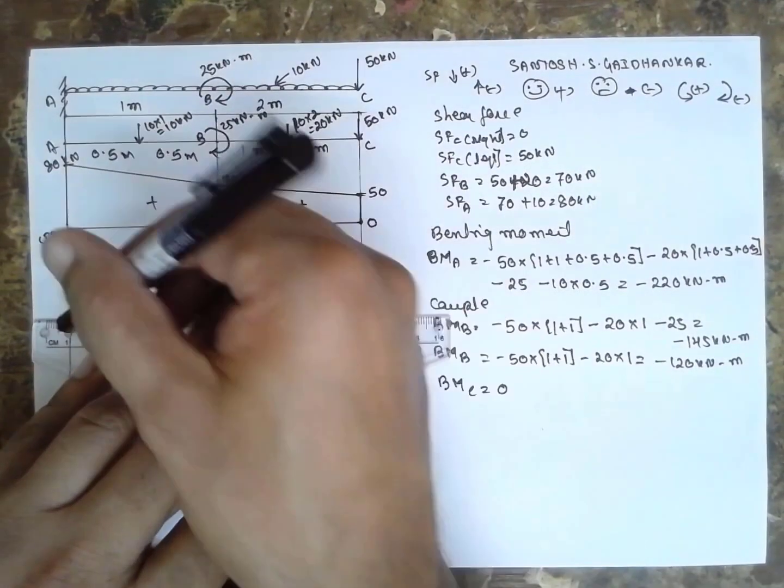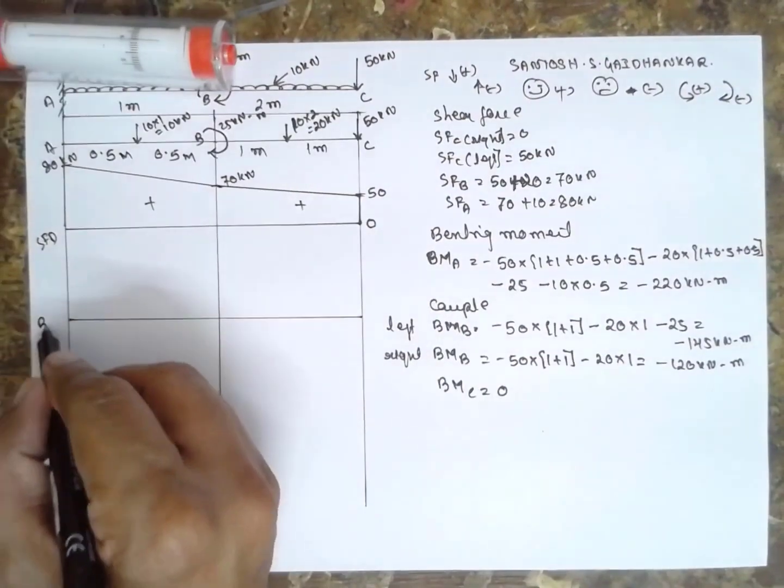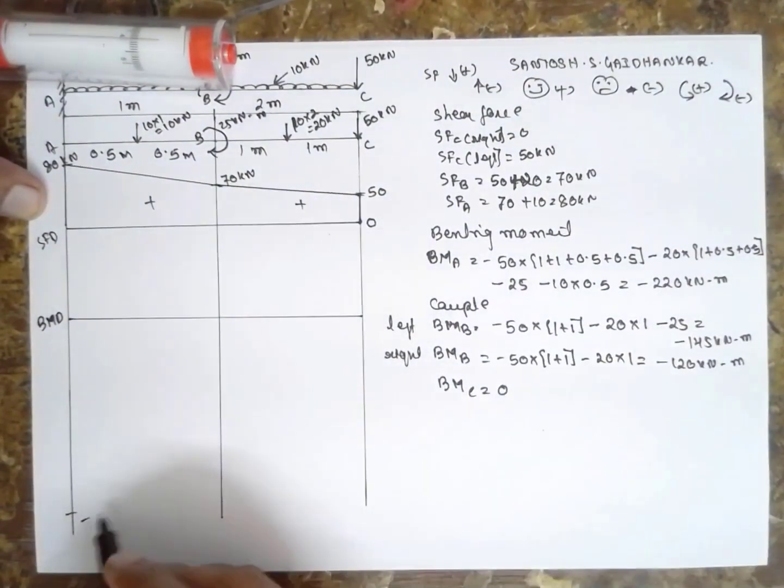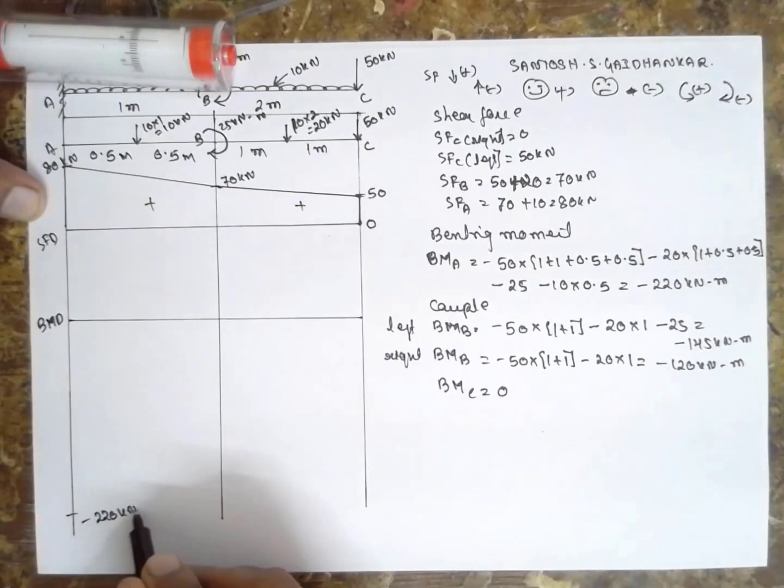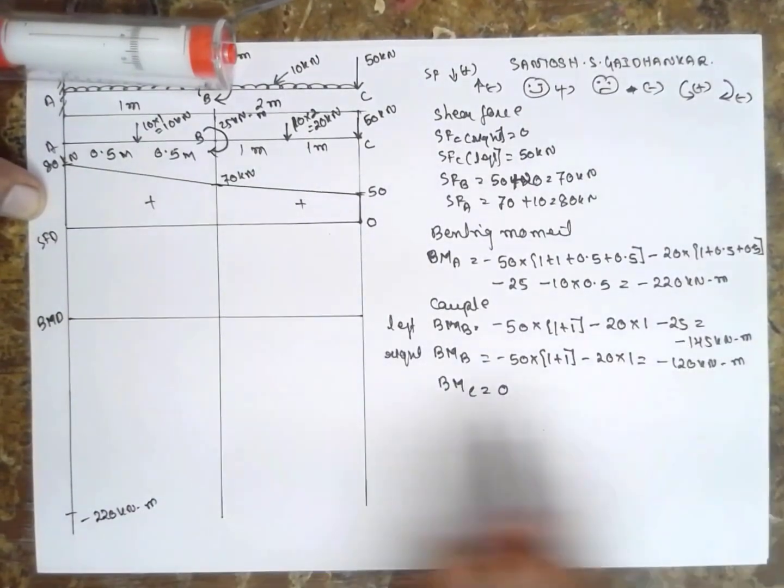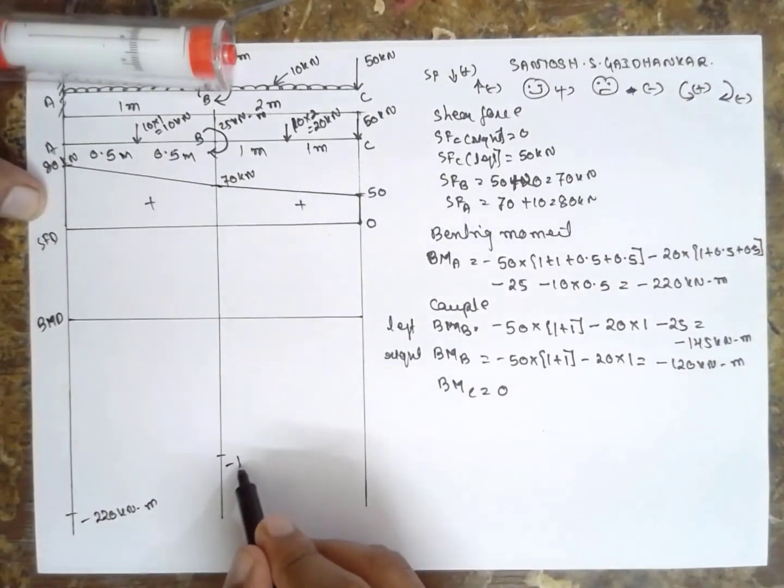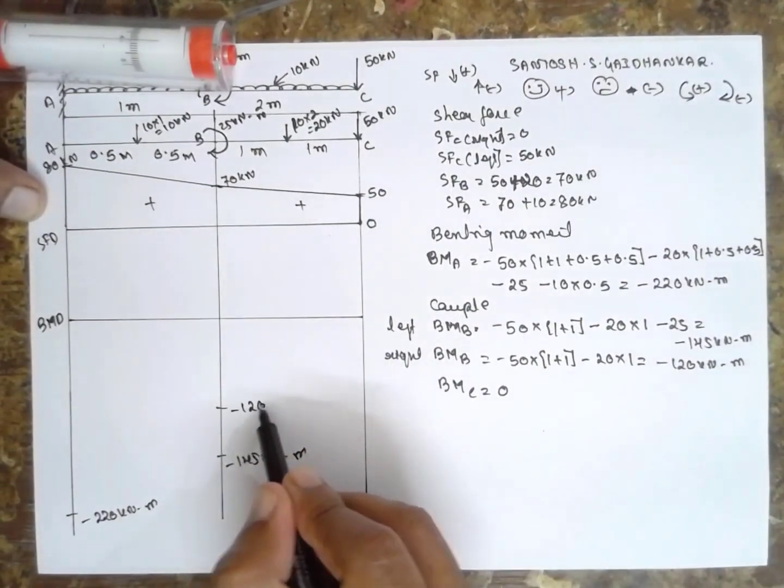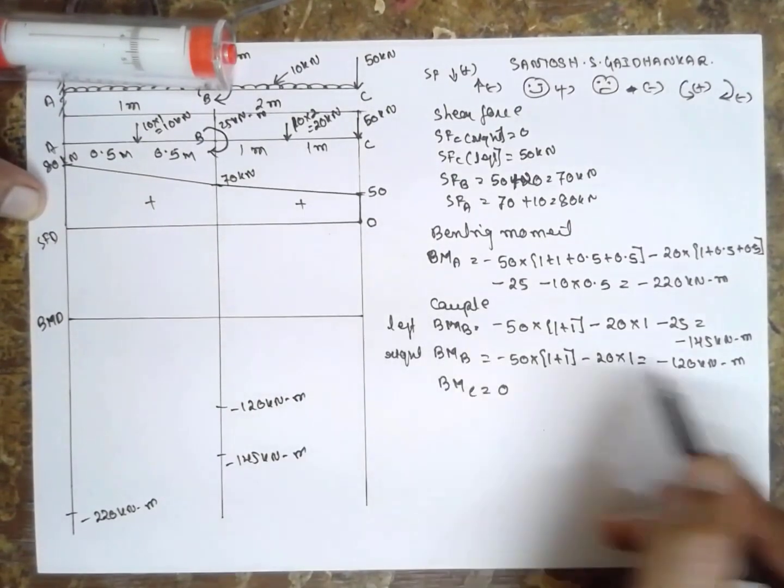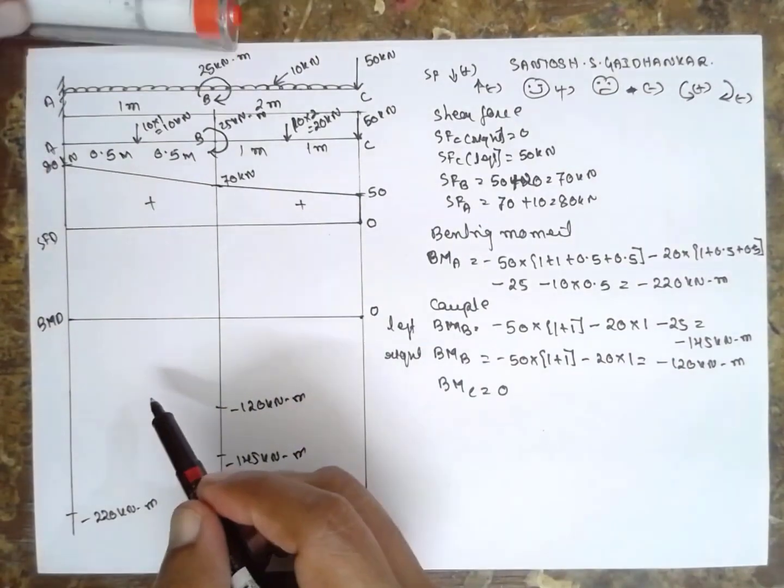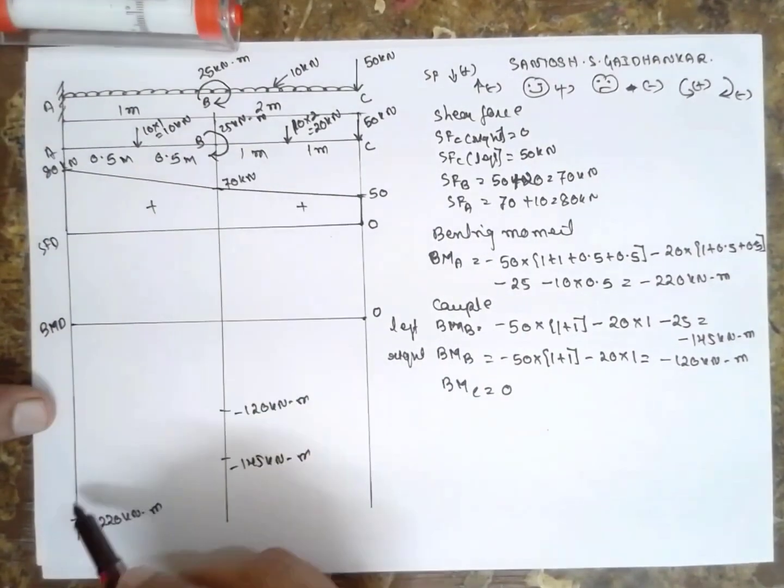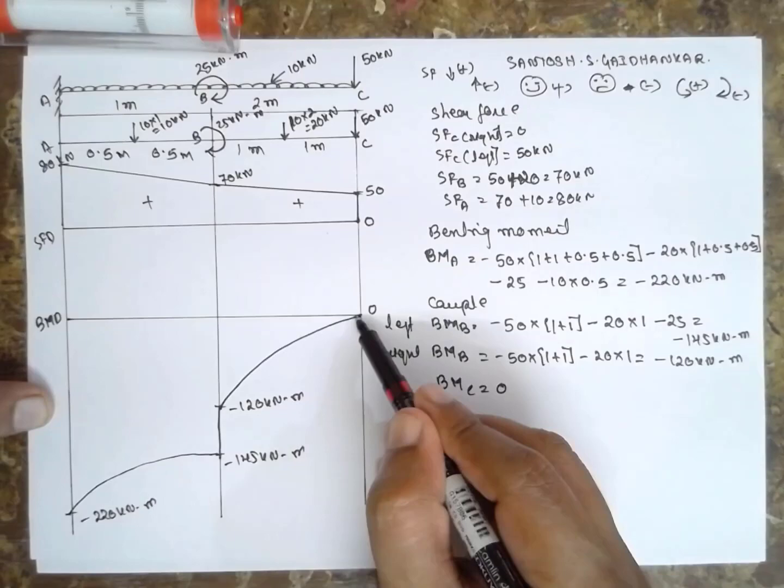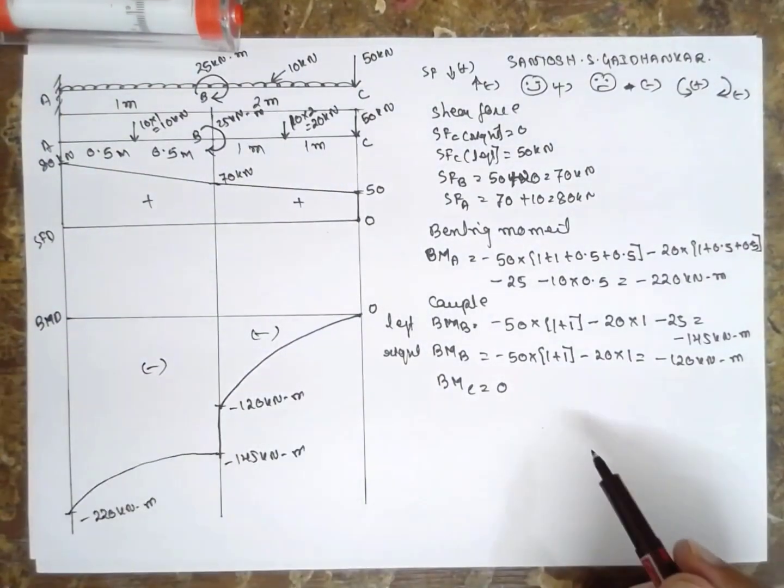Now I am drawing the bending moment diagram. Above is positive, below is negative. First at A is minus 220 kN·m. At B there is a couple, so two values: minus 145 kN·m and minus 120 kN·m. At C is 0. As it is UDL, we draw parabolas. Then straight line, then parabola. All negative. In this way you have to solve the problem.